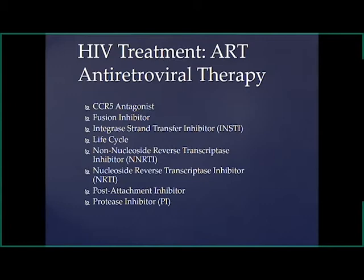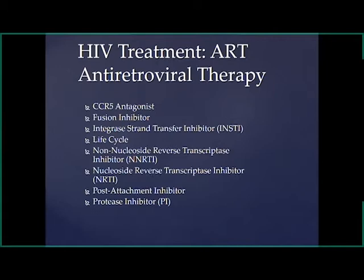Jake discusses antiretroviral therapies for HIV. One particularly interesting finding is that many if not all antiretroviral drugs don't cross the blood-brain barrier (BBB). The CNS is therefore a great place for HIV to potentially hide, which is why getting viral counts down is so important and why measuring neuroinflammation is particularly important in this population.